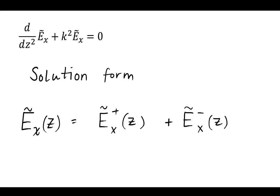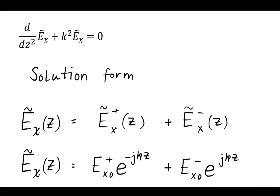What is the solution form of a differential equation like this? If we think back to our class, we know that it might have two parts — the plus and the minus. The plus represents a forward traveling wave, and the minus represents a reverse traveling wave, and the total solution is a summation of both. The form of these forward and reverse traveling waves is something with an e to some component, so we'll write them like this.